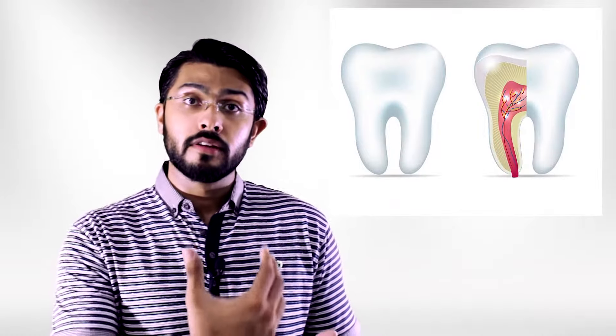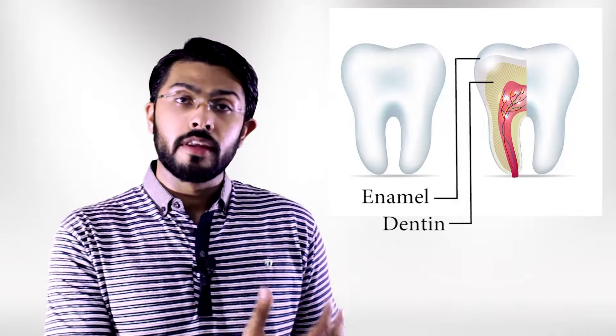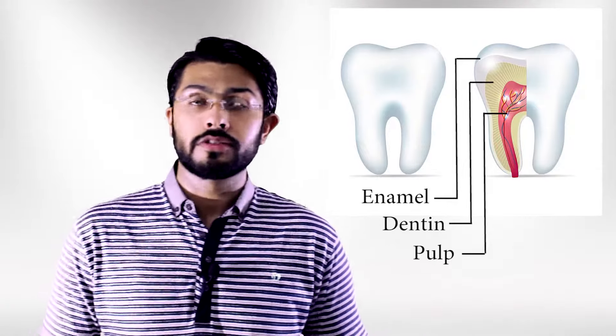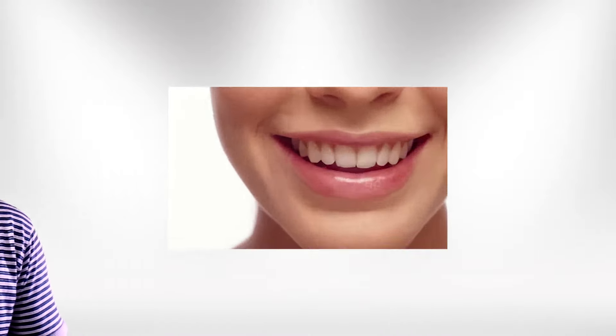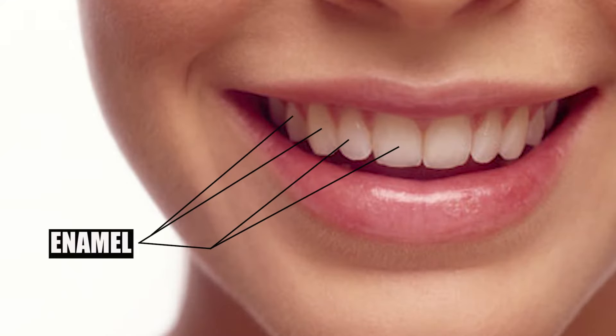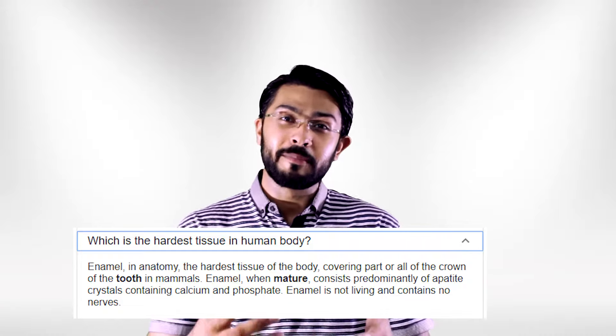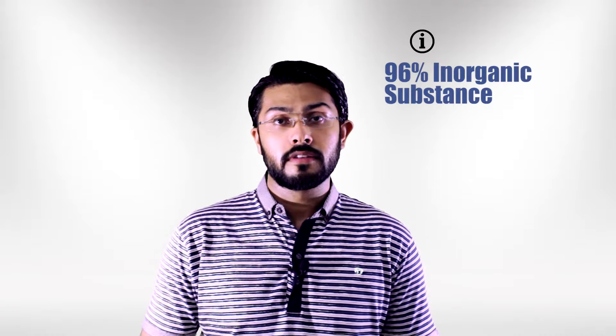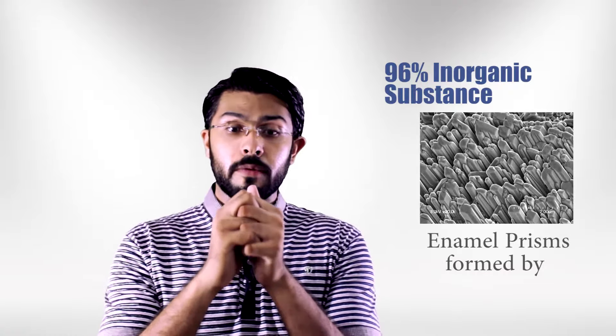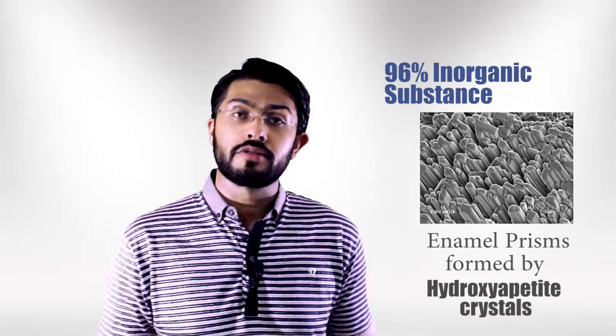By now I assume you already know that the tooth consists of layers namely enamel, dentine, then there's pulp, and then there are supporting structures of the tooth. The enamel is the outer surface — the surface you are usually able to see when someone smiles in front of you. It is the hardest part of the human body, even harder than your bones, but unfortunately the decay begins here. The enamel consists of 96% inorganic substances.